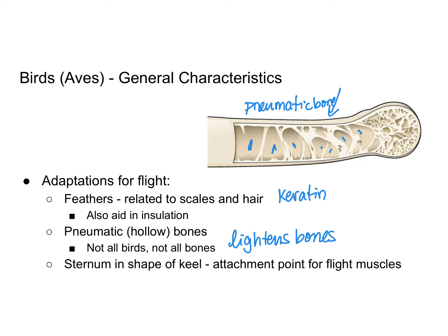Birds also have a sternum, also known as a breastbone, that is shaped like a keel — similar to the shape on the bottom of a sailboat. The sternum is the attachment point for their flight muscles, so their breast muscles are the ones involved in flight.